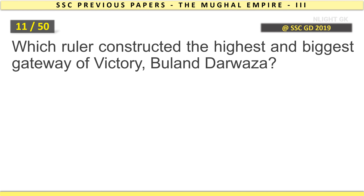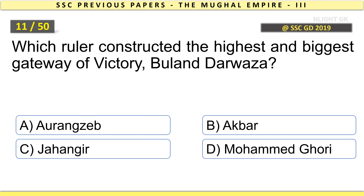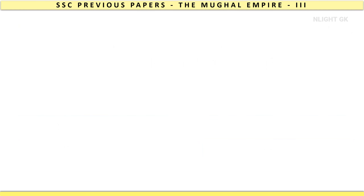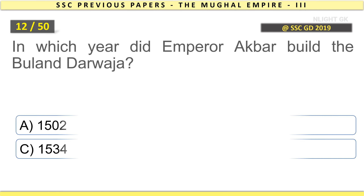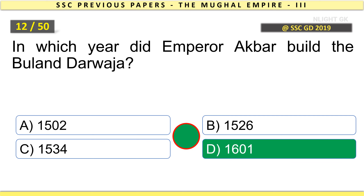Which ruler constructed the highest and biggest gateway of victory, Buland Darwaza? Akbar. In which year did Emperor Akbar build the Buland Darwaza? In 1601.